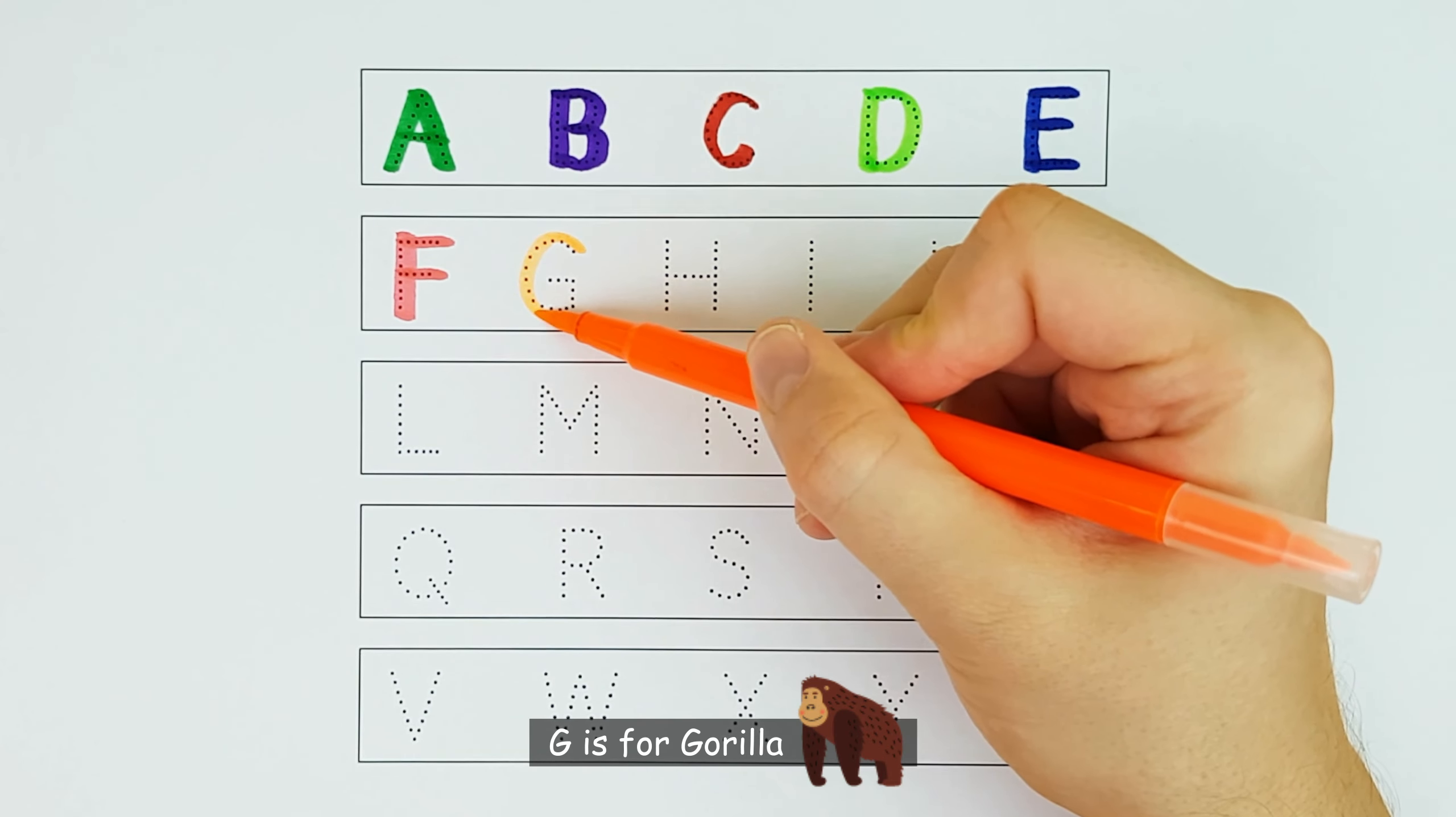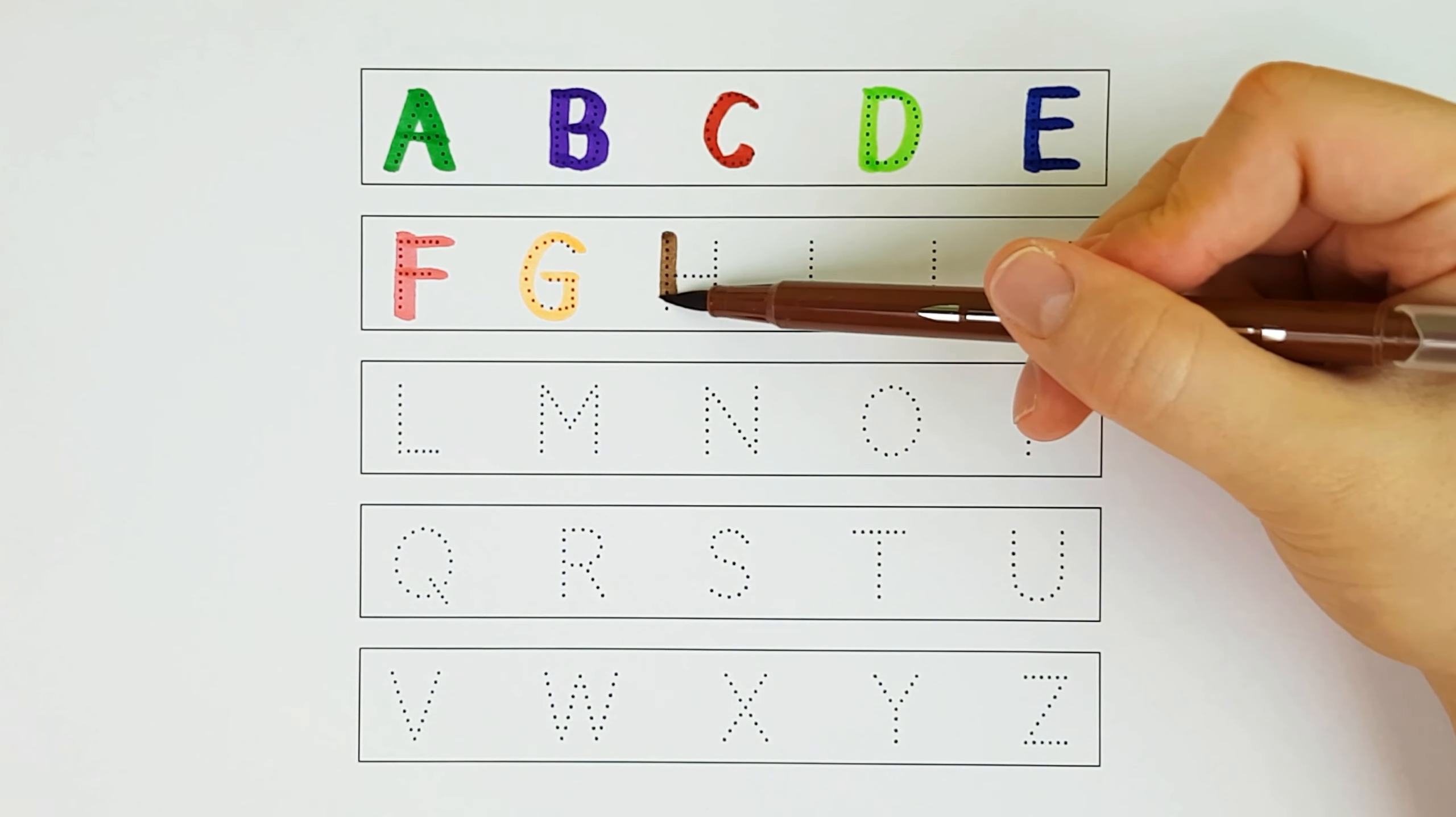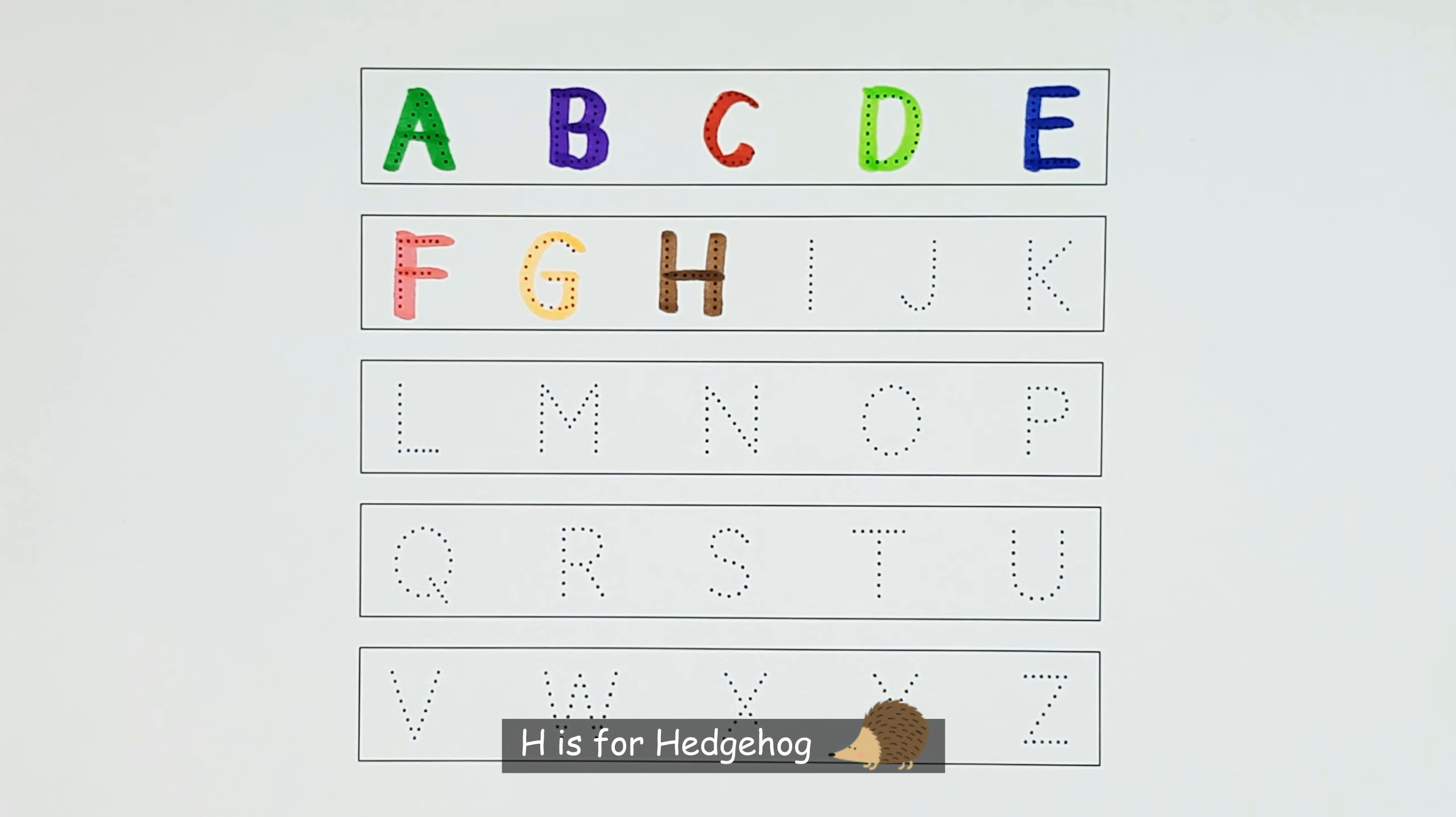G. G is for gorilla. G. H. H is for hedgehog. H.